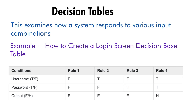T means true and F means false for both username and password. The output E means an error message and H means it goes to the home screen. If both username and password are false, an error is thrown. If username is correct and password is incorrect, it throws an error. If username is incorrect and password is correct, it also throws an error. Only when both username and password are true does it go to the home screen. Remember, these tables can only be derived when there are multiple input combinations.